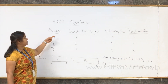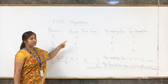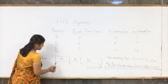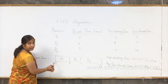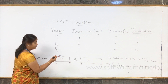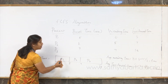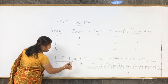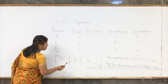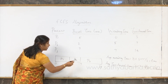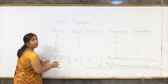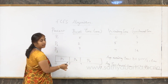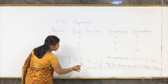Now let us calculate. P1's burst time is 5 milliseconds, P2's is 2 milliseconds, P3's is 7 milliseconds. In the Gantt chart, P1 gets the CPU at 0 milliseconds and holds it for 5 milliseconds. So P1 does not wait at all — its waiting time is 0. P2 has to wait 5 milliseconds for P1 to complete. P3 has to wait for both P1 and P2 to complete — that is 7 milliseconds.